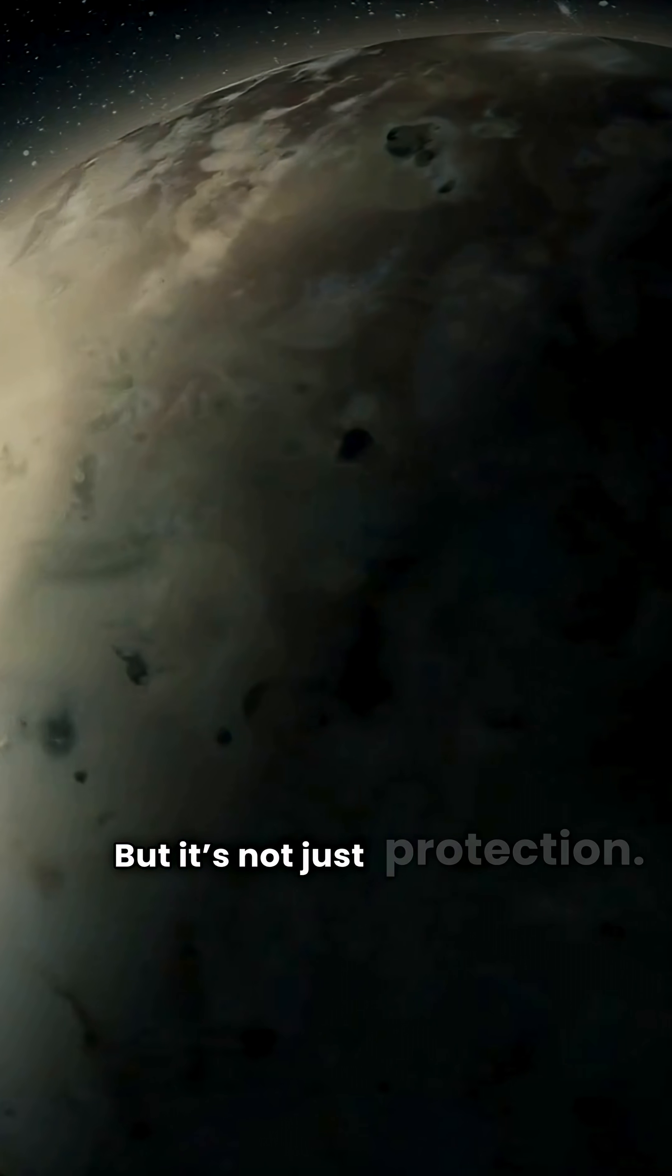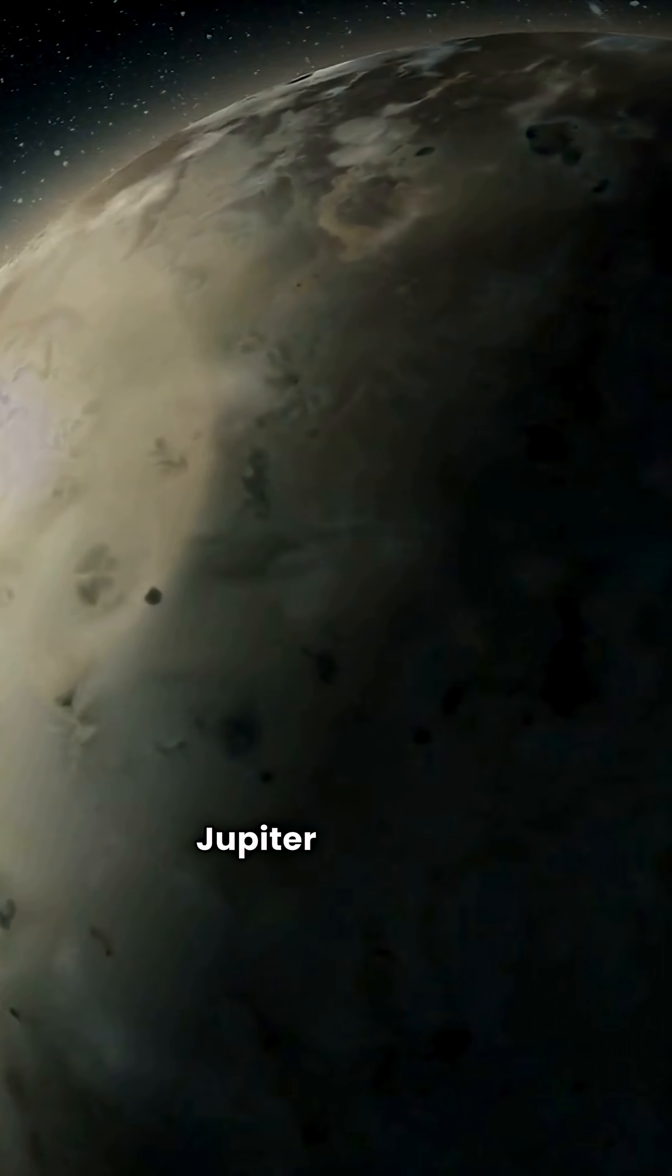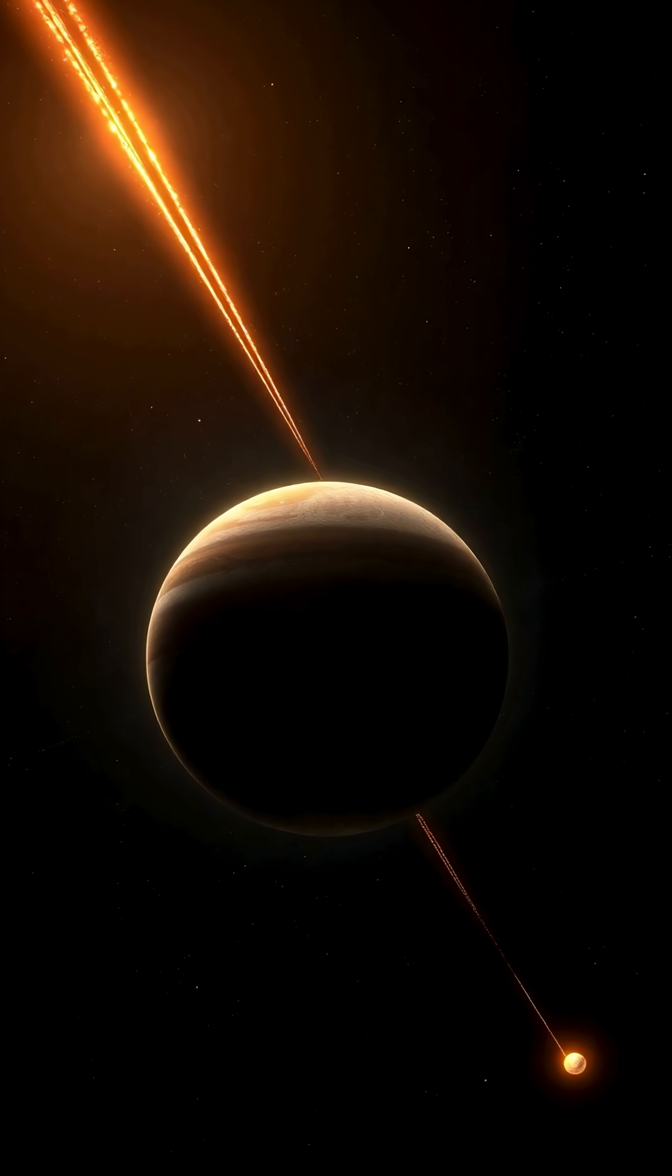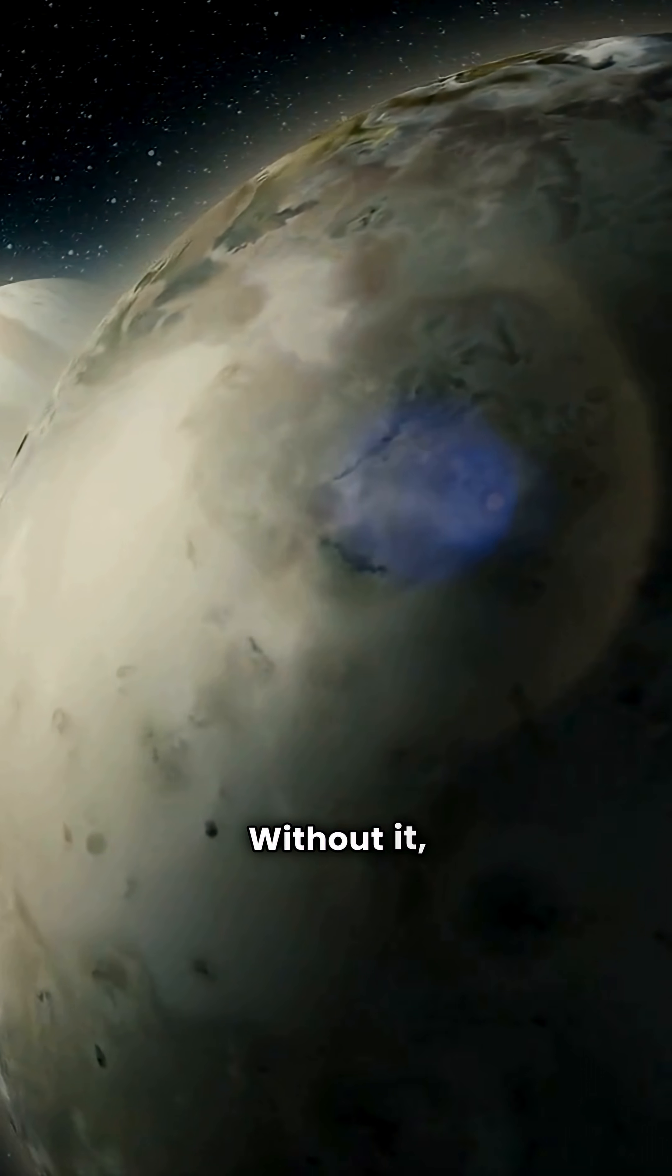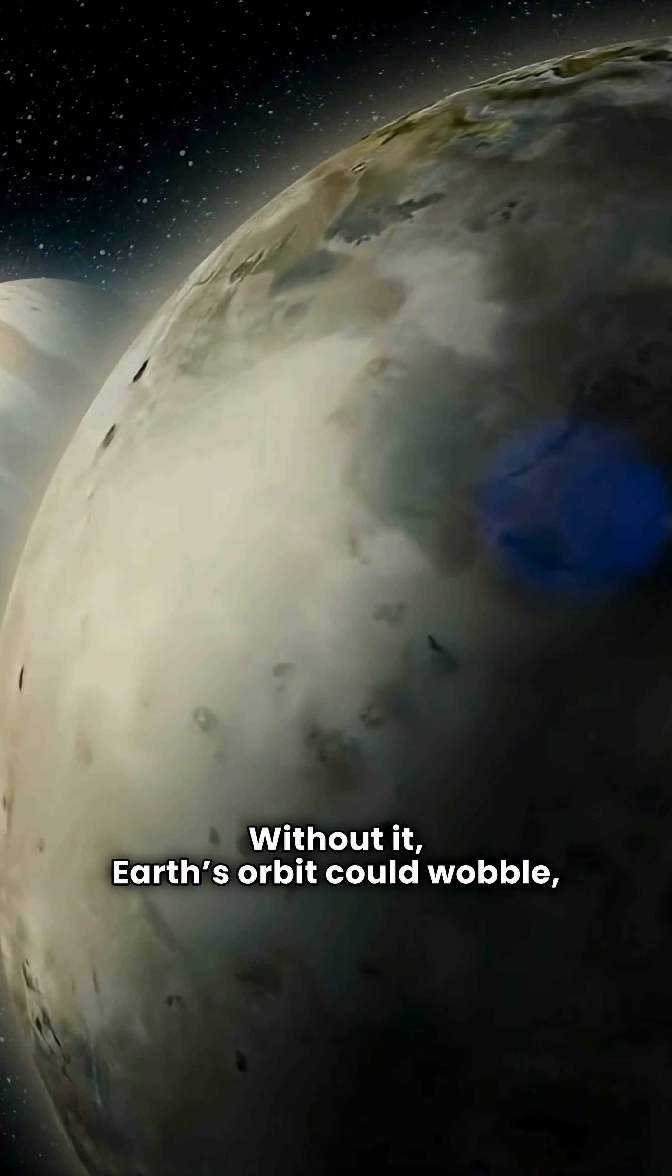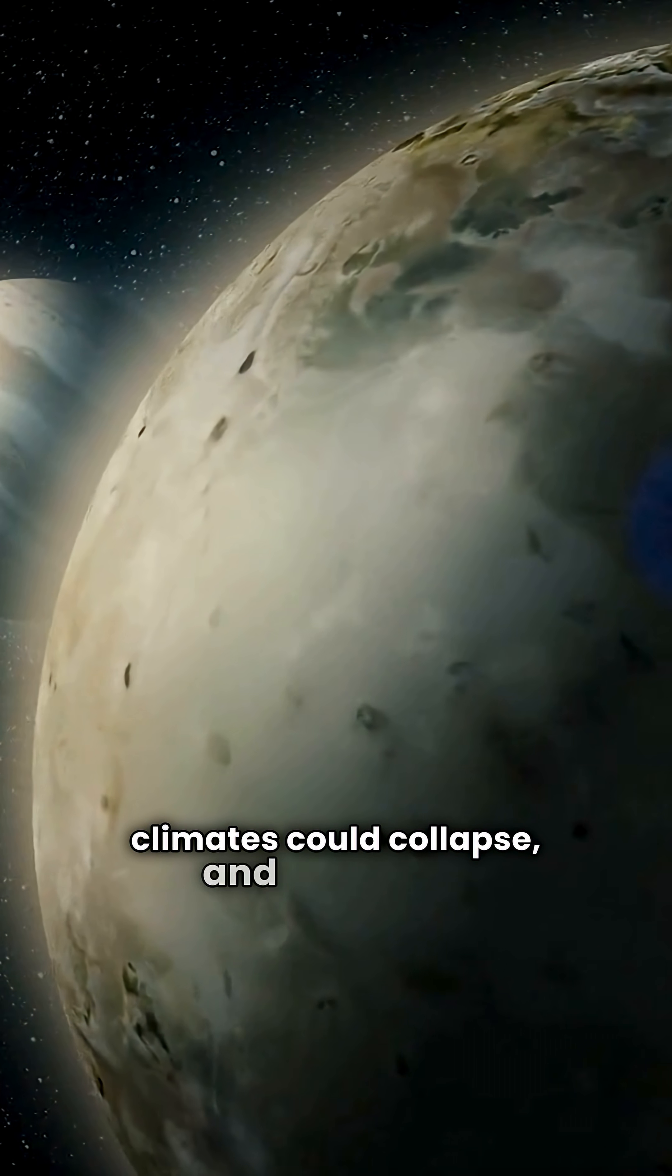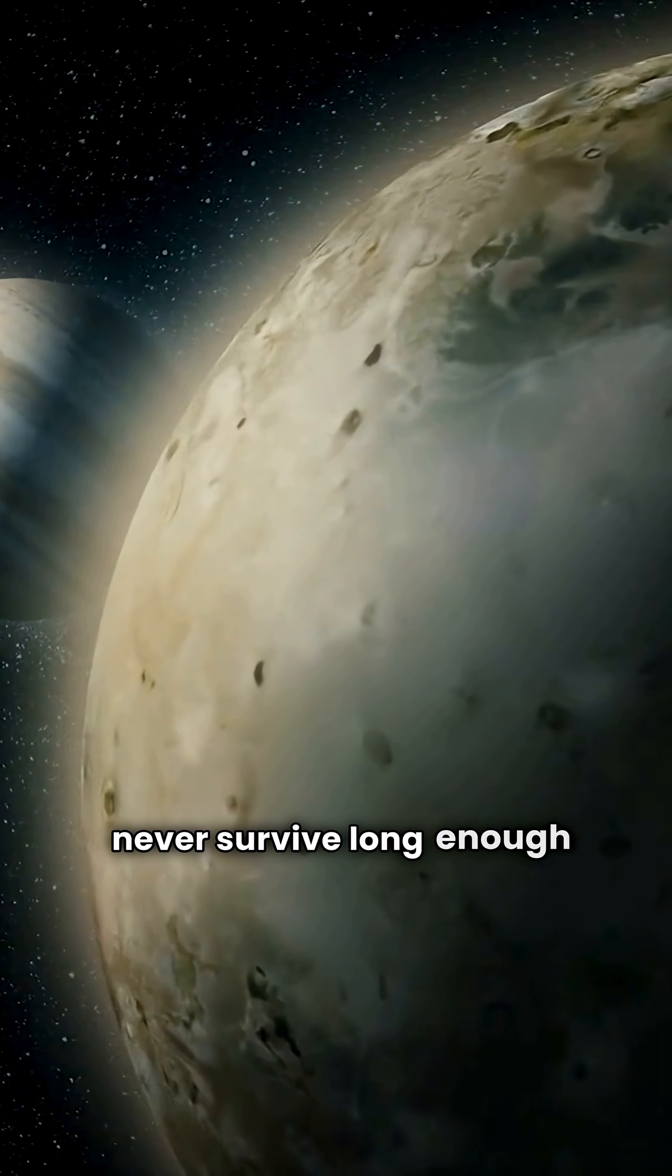But it's not just protection. Jupiter also acts like a slingshot, hurling comets away and stabilizing orbits. Without it, Earth's orbit could wobble, climates could collapse, and life might never survive long enough to evolve.